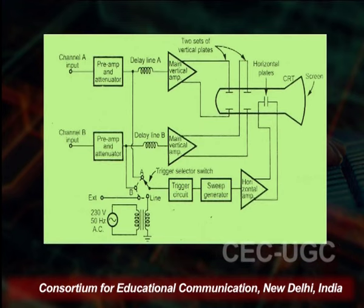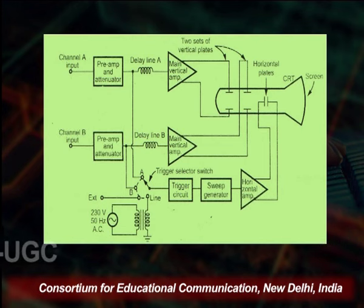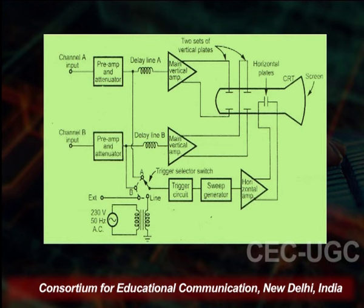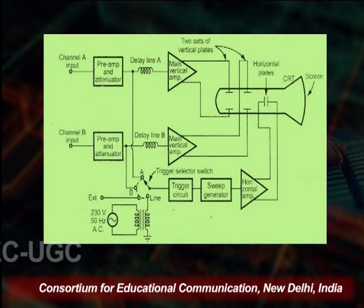The time-based circuit may be the same or different. Such an oscilloscope is called the dual beam oscilloscope. On the screen you can see the dual beam oscilloscope. It works with two different vertical plates but a single horizontal plate. The same horizontal plate will work and it drives both beams.